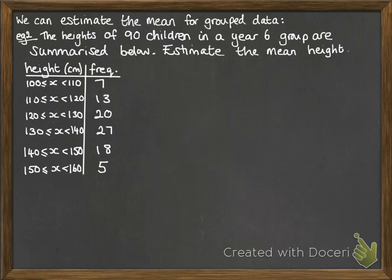Here are the heights of 90 children in year 6, and we want to estimate the mean height. We can see there were 7 people between 100 and 110 centimeters. We don't know the exact height of each of those 7 people, but we can estimate the mean by looking at the halfway point in that group. We'll estimate those 7 people were 105 centimeters, and then we'll estimate the next 13 people were 115 centimeters - we're looking at the middle of each group each time.